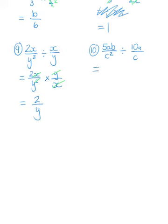Lastly, question 10. We can divide by fractions, but we don't like to — it's a lot easier to change it to its inverse and multiply. Now that I've written that down: 5 and 10 — 5 goes into both, leaving 1 and 2. Then I've got c and c squared, so that'll cancel. I've also got a and a. That means I am left with b over 2c.